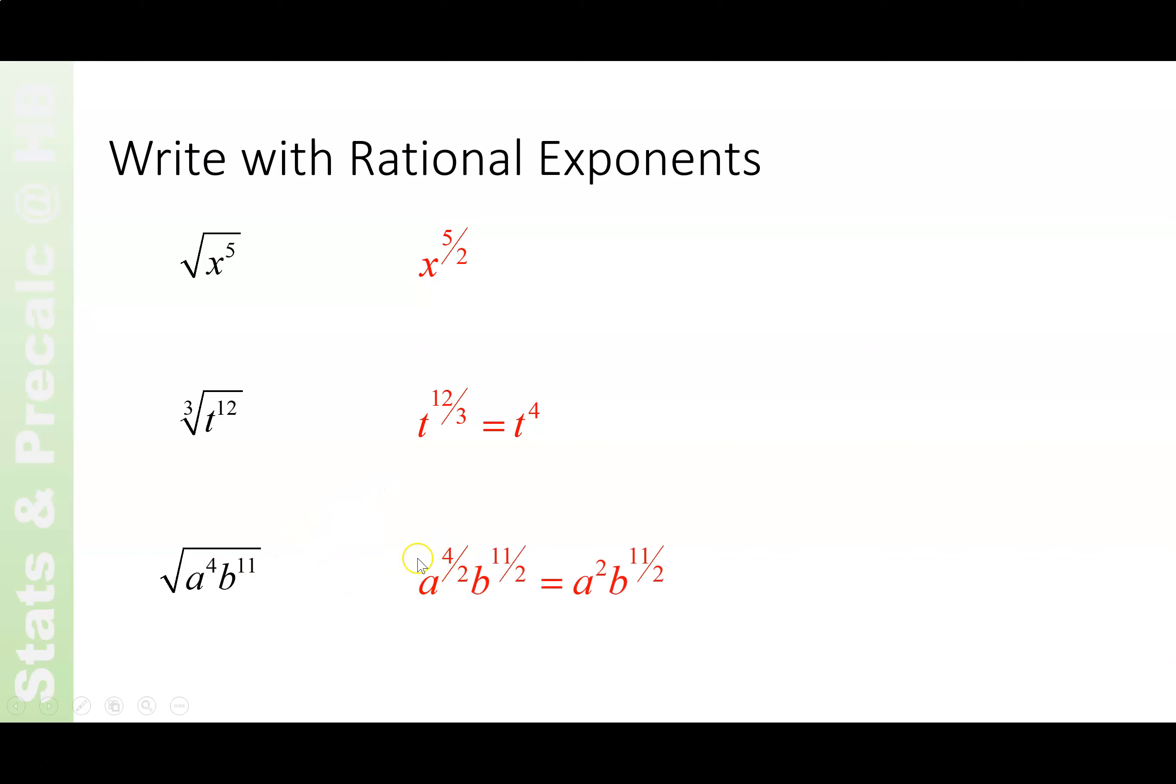Here's one that comes out mixed. a to the 4 halves would become a squared. b to the 11 halves does not simplify. But you're also distributing this power. This is like taking the 1 half power of everything. So b to the 11th to the 1 half power. And then you can simplify the ones that simplify.